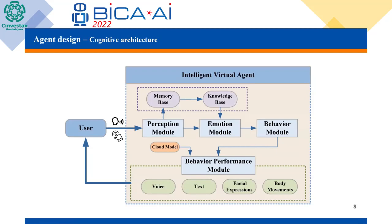To make the agent human-like, we conducted a cognitive architecture for the EHRVA, which consists of four modules — perception, emotion, behavior, and behavioral performance — as well as two databases: memory database and knowledge database. The perception model acquires users' input, sends the processed information to the emotion model, and stores it in the memory base. Users can input information through voice. The emotion model generates appropriate emotional responses. Then the behavior model generates behaviors according to emotions and behavior generation rules. Finally, the behavior performance model presents four kinds of actions to the user: voice, text, facial expressions, and body movements.